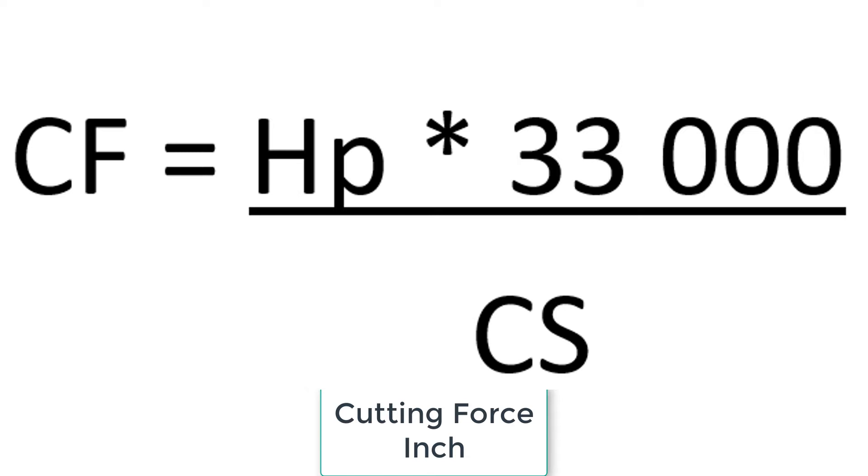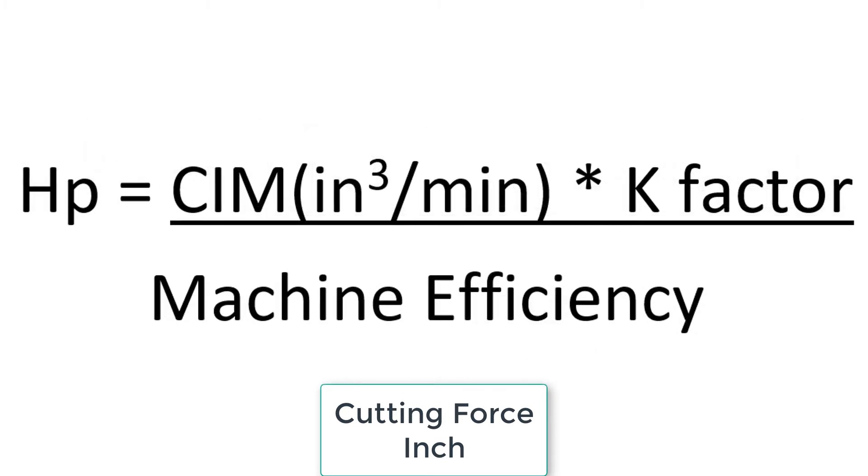The next step we need to perform before we can use our formula is to calculate the horsepower required for the drilling operation. To calculate horsepower we have to first calculate the cubic inches of material removed per minute. Multiply this by the k factor and then divide by the machine efficiency.